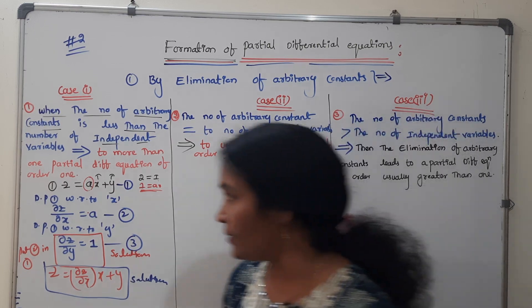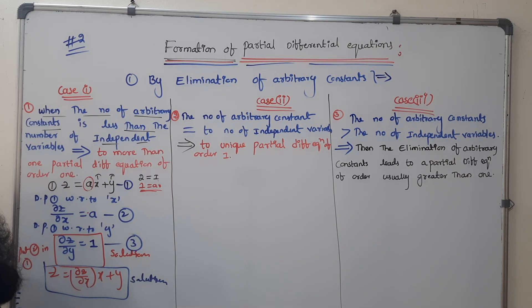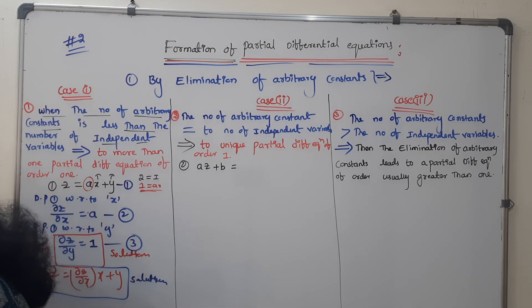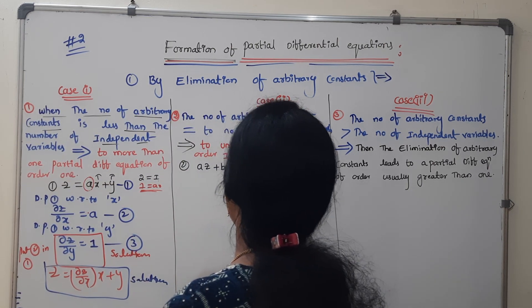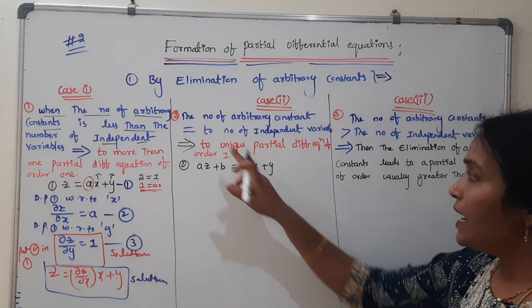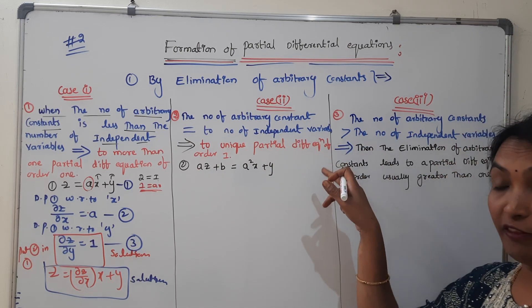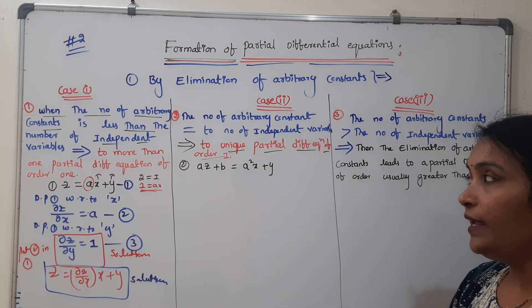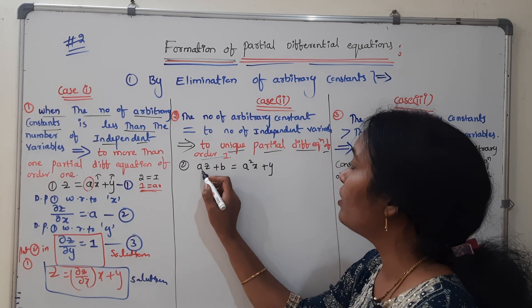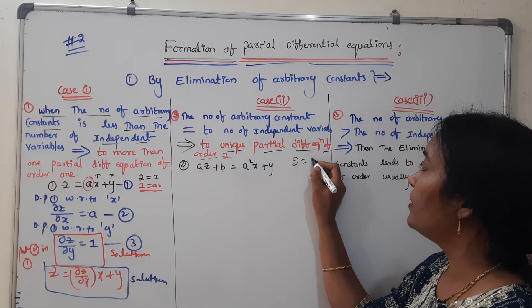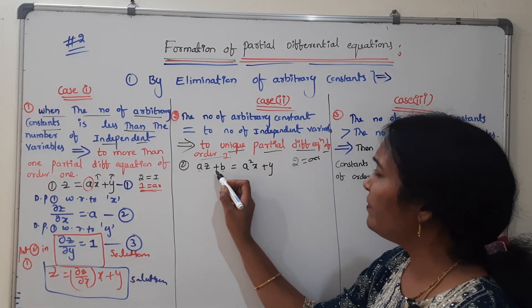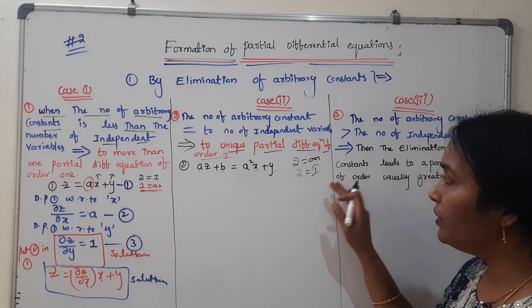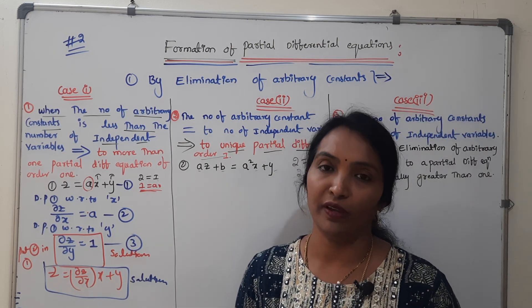Consider one more example for the second case. Let z equal a square x plus y — where a plus b equals a square x plus y. The number of arbitrary constants equals the number of independent variables. We have 2 arbitrary constants: a and b, and 2 independent variables: x and y.